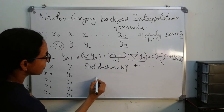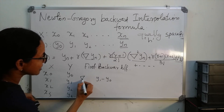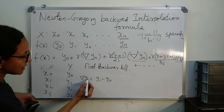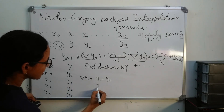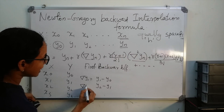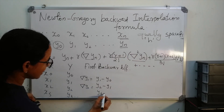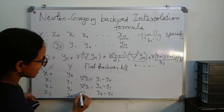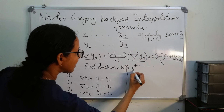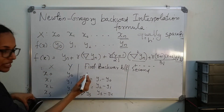y1 minus y naught will be denoted by the inverted delta symbol as backward delta y1. The next first difference is y2 minus y1, denoted as backward delta y2. Then y3 minus y2 is backward delta y3. The second differences are differences of first differences — that is, second term minus first term.